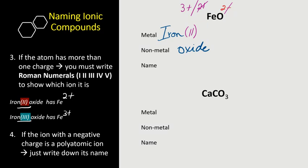Now let's write the full name. It's iron, write down the charge (II), oxide. Let's do another example.